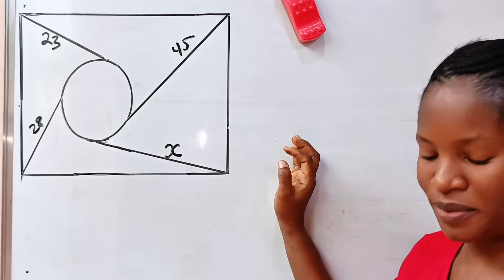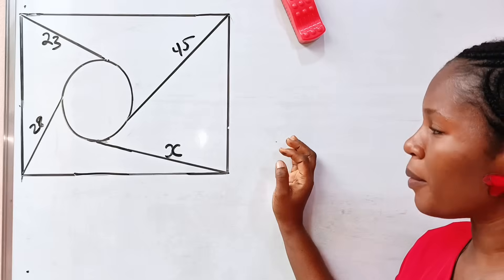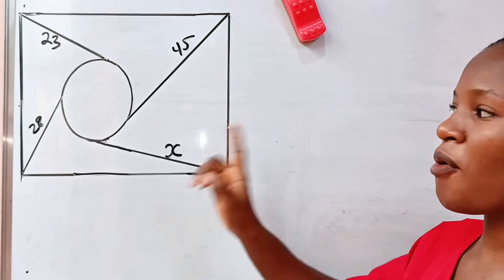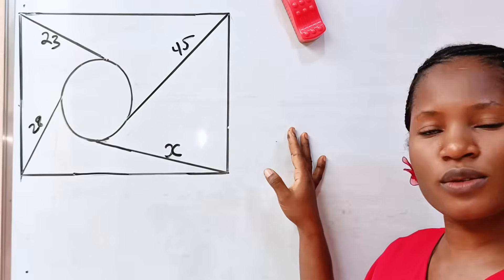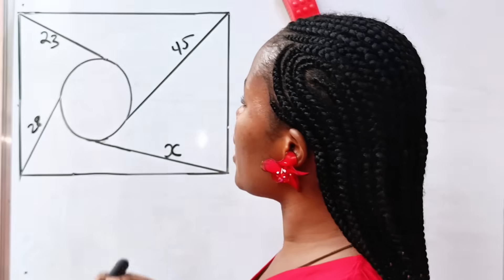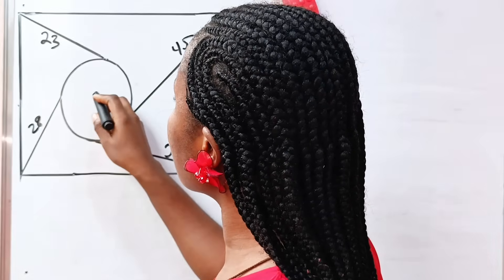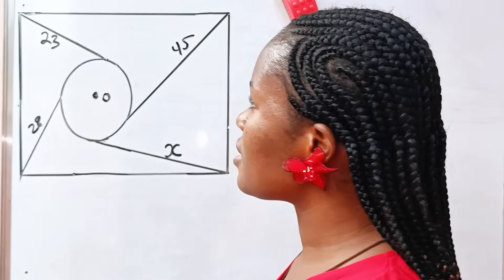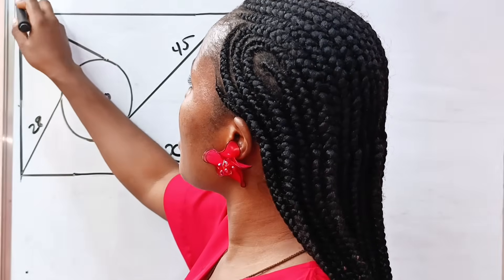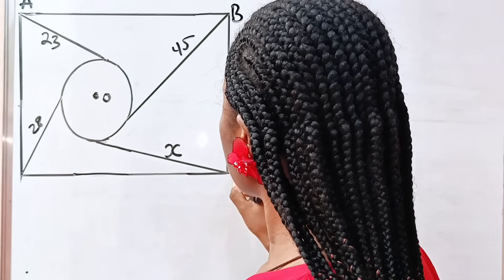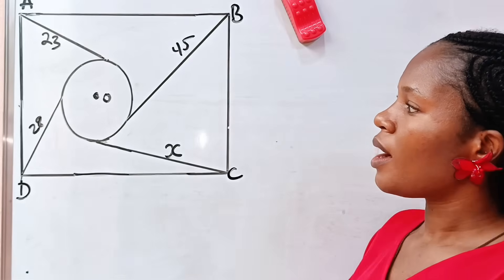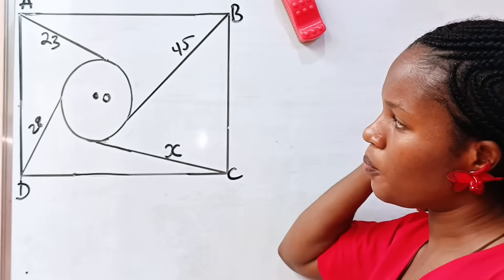But this is how to go about it. First of all, let's get the center of that circle — this is not to scale at all. So let's assume this is the center of the circle, and we have points A, B, C, D, and this place is the center of the circle.